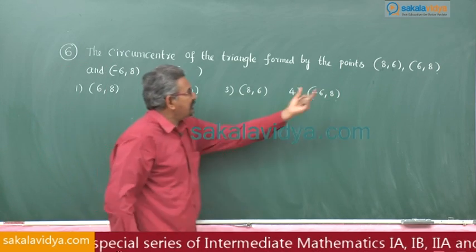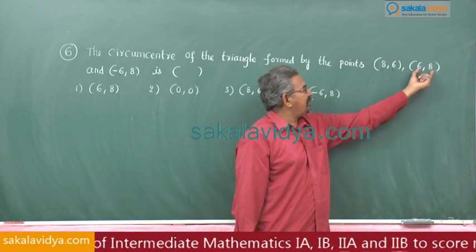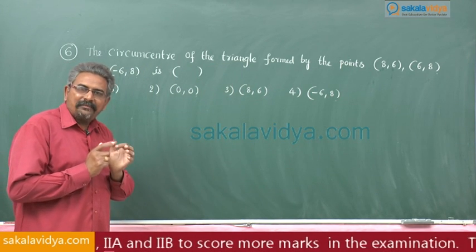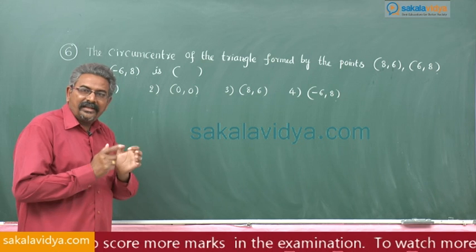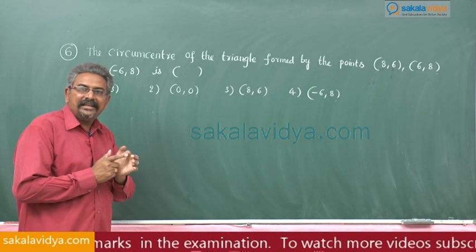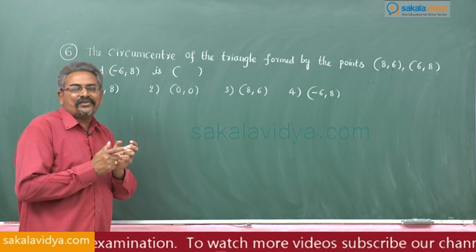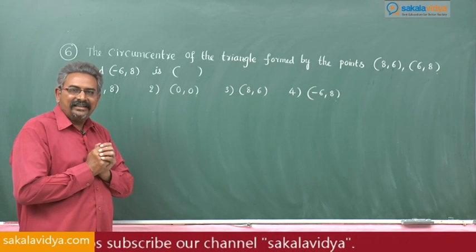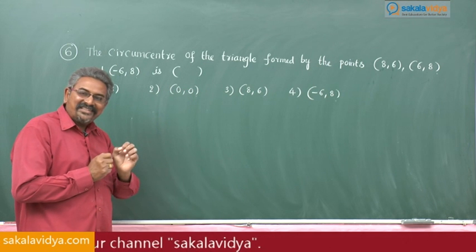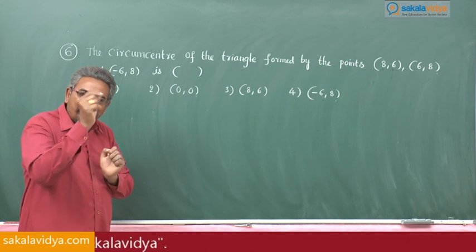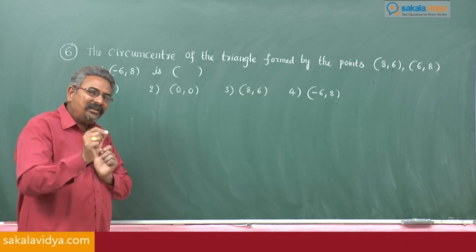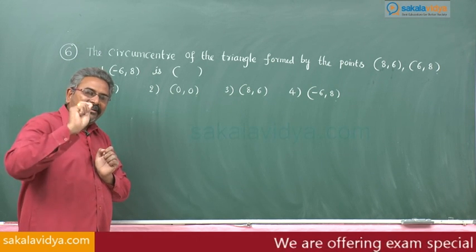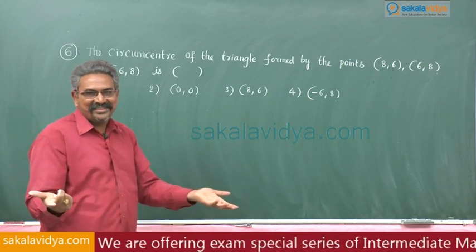That means, if you say this is (x₁, y₁), this is (x₂, y₂), this is (x₃, y₃), x₁² + y₁², x₂² + y₂², x₃² + y₃² are same. That means, indirectly these 3 points are equidistant from origin.